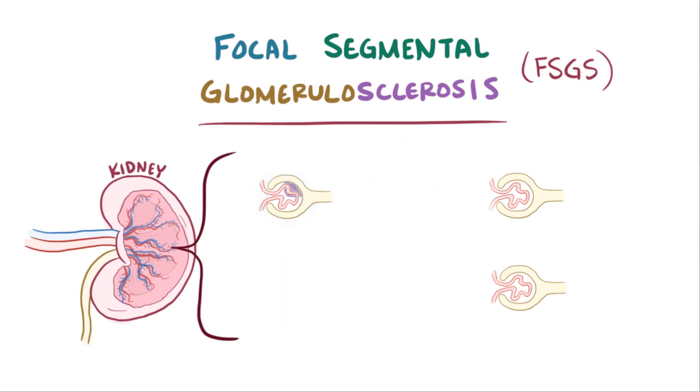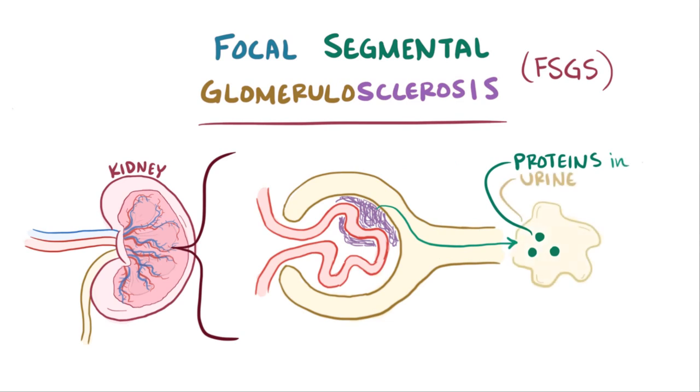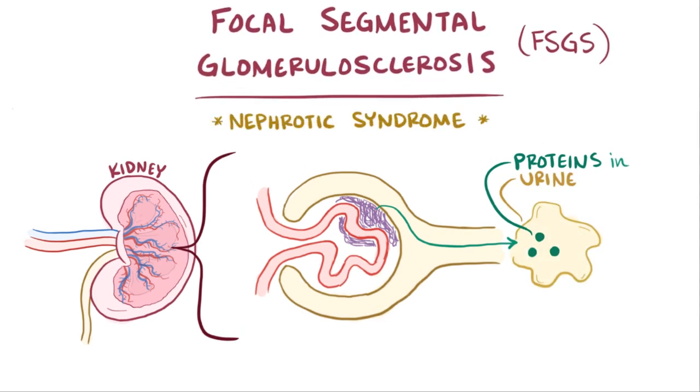Those glomeruli that are affected, though, allow proteins to filter through into the urine, and ultimately people with FSGS develop nephrotic syndrome.